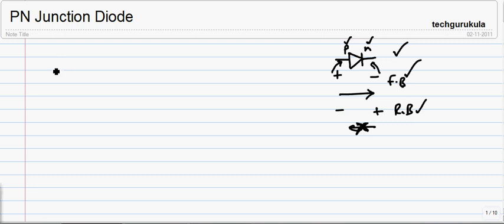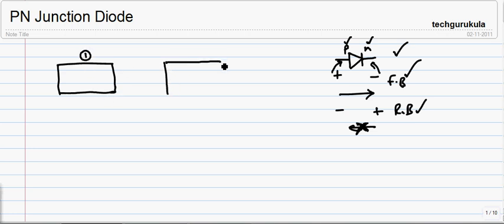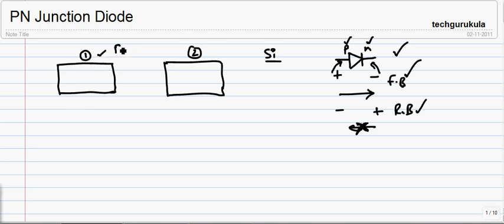To start with, let us take two pieces of semiconductor material — this being the first material and this the second material. These two materials are of the same component. Let us say these two materials are silicon 1 and 2. We are going to dope this first material with boron, which is a trivalent element. When we dope this material, it becomes a P-type semiconductor material.